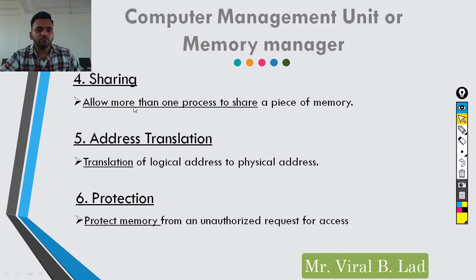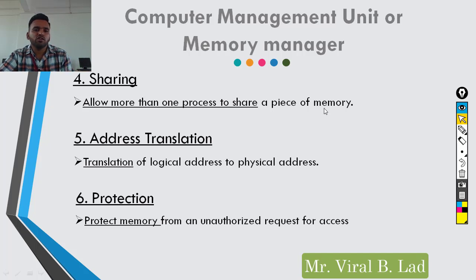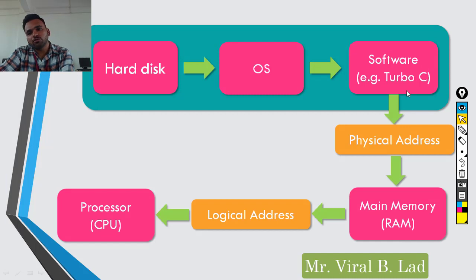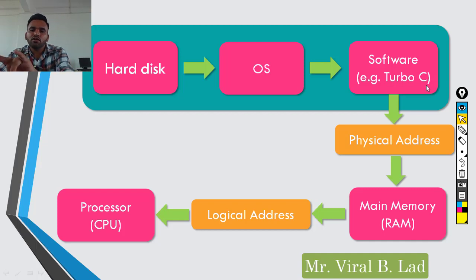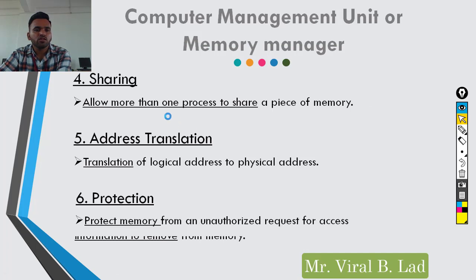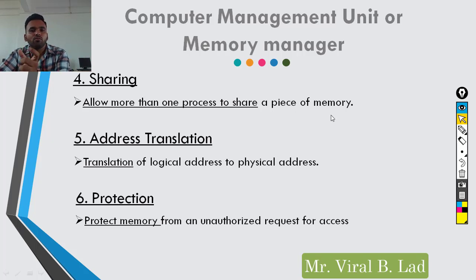Next is sharing. Sharing allows more than one process to share a piece of memory. For example, if you have two programs like Turbo C and MS Word, they are different programs with different processes. However, they can share a common piece of memory. This operation is called sharing — allowing more than one process to share a common piece of memory.